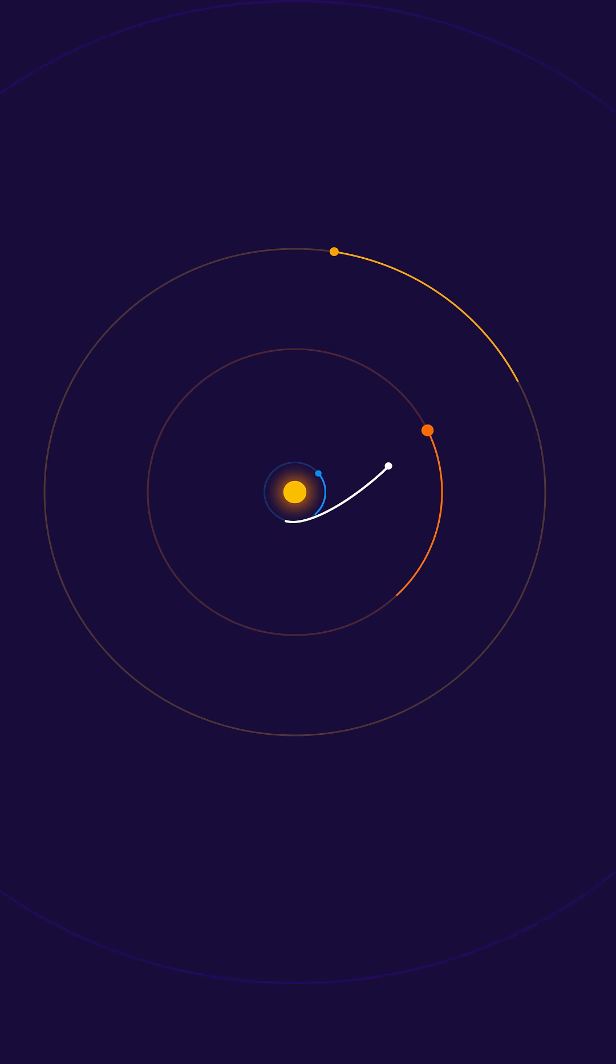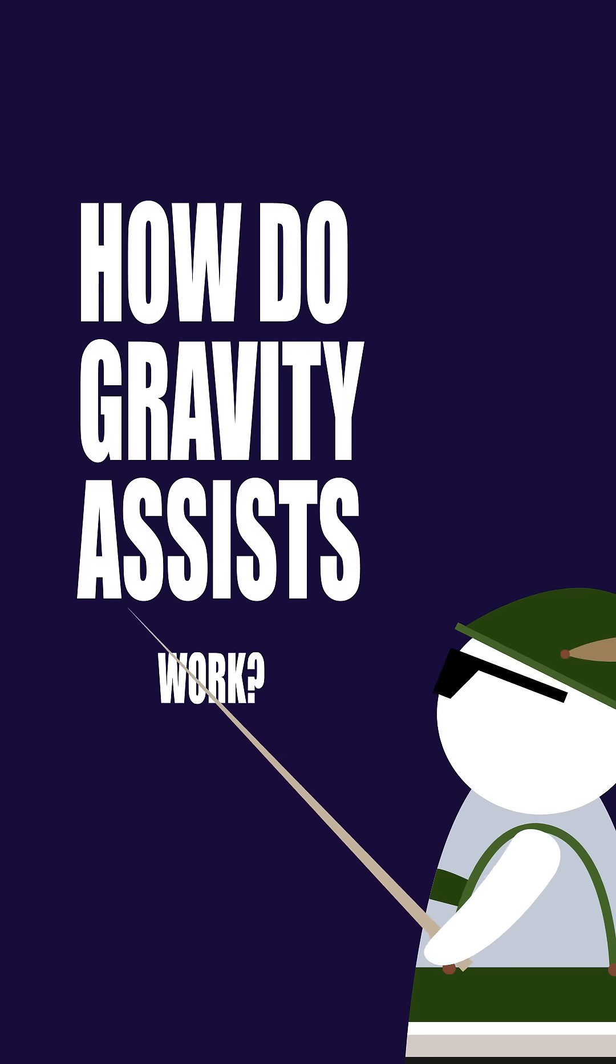Voyager 1 used two gravity assists to accelerate to about 17 kilometers per second. But how do gravity assists work?